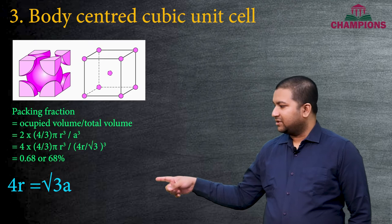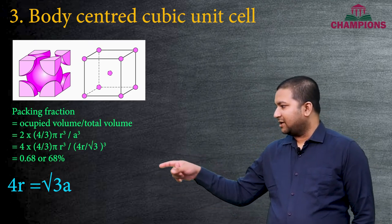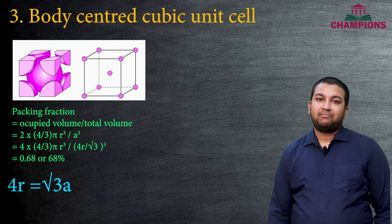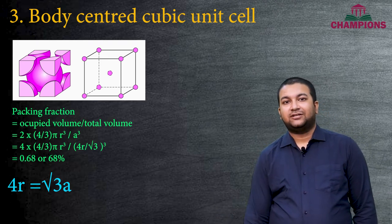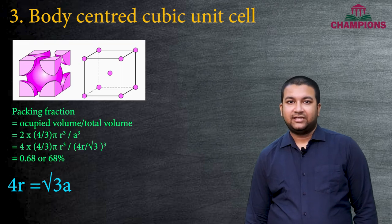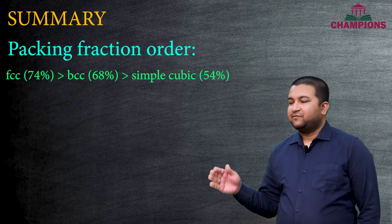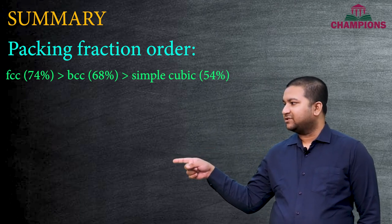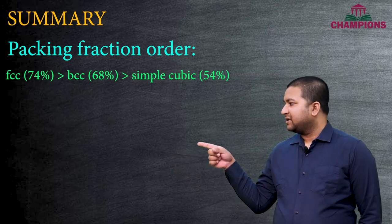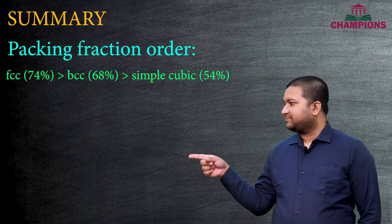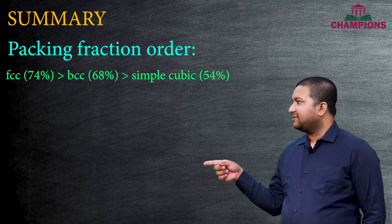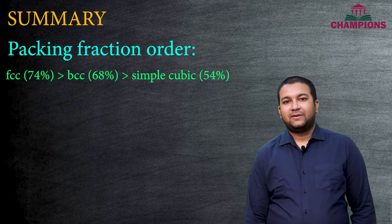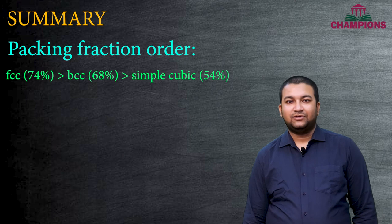Substituting this value into the equation gives a packing fraction of approximately 68% for the body-centered cubic unit cell. To summarize: the maximum packing fraction is achieved by the face-centered cubic unit cell at 74%, followed by BCC at 68%, and lastly the simple cubic unit cell at 54%. That's all about packing fractions — I will see you in the next video.